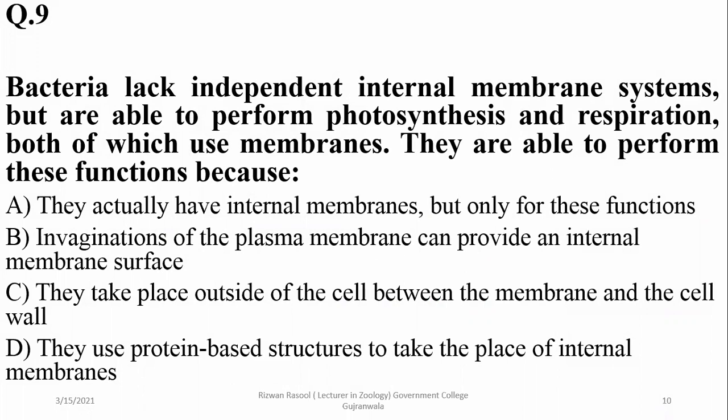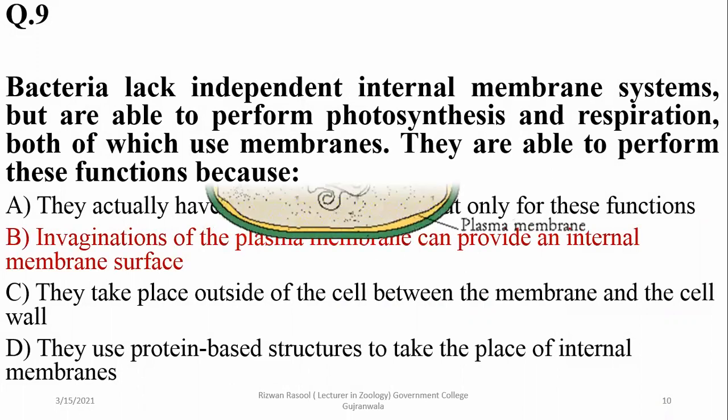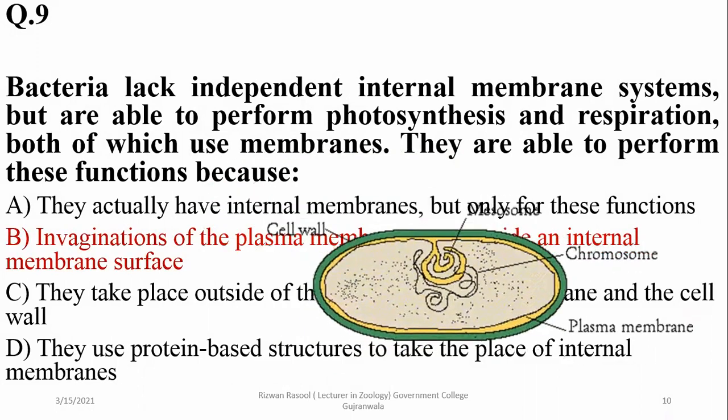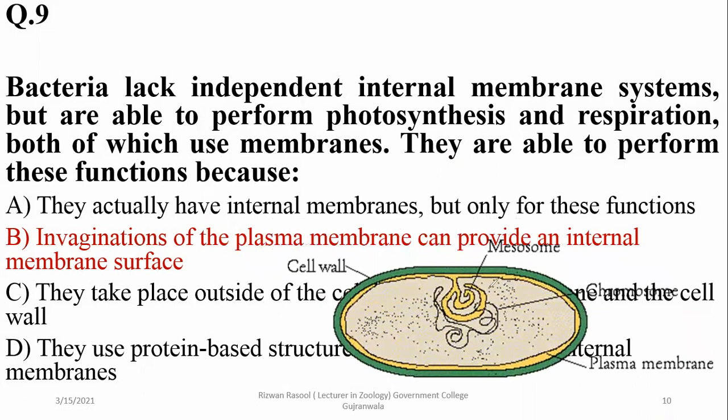Bacteria lack independent internal membrane systems, but they are able to perform photosynthesis and respiration, both of which use membranes. They can perform these functions due to mesosomes, which are internal invaginations of the plasma membrane that provide a large surface area, so the right option is beta. The presence of mesosomes increases surface area for the attachment of various enzymes in prokaryotic cells.